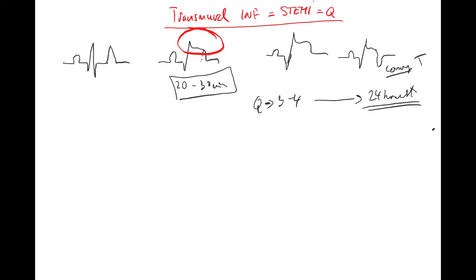...in unstable angina, for example. But watch out, coronary T can also be in non-STEMI. Q and ST elevation are only here in STEMI, but coronary T can also be in non-STEMI MI. But still, I will talk about the transmural one.